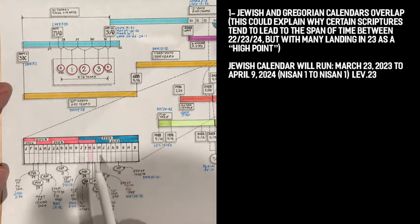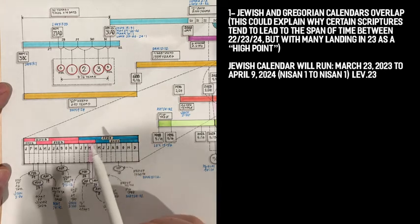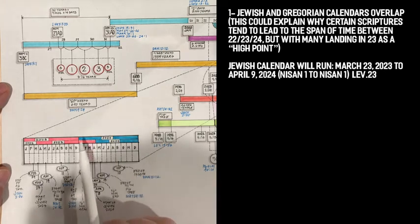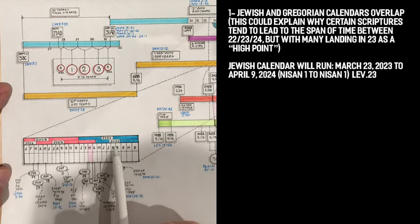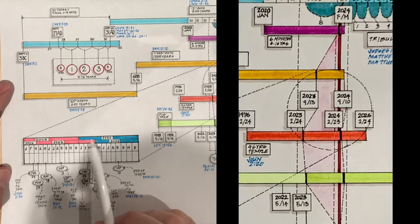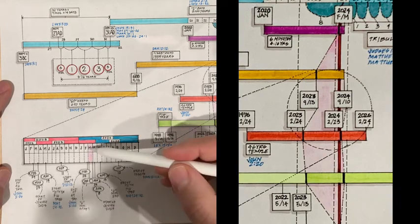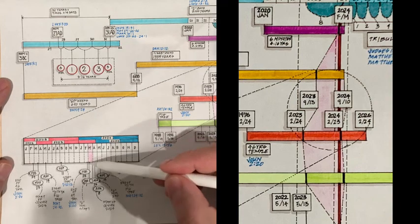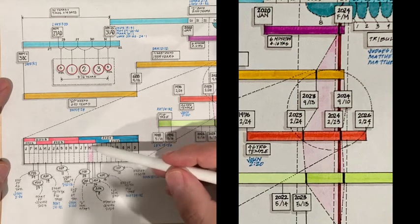That means all of these scriptures we've been looking at, which point to 22 to 23 and sometimes 23 to 24. If you go back to the first chart, you see those three years, 22, 23, and 24, pointing to end of 23, beginning of 24 as the absolute best possible spot. You can see the pink area for this door and window to be fully open and the rapture to occur.